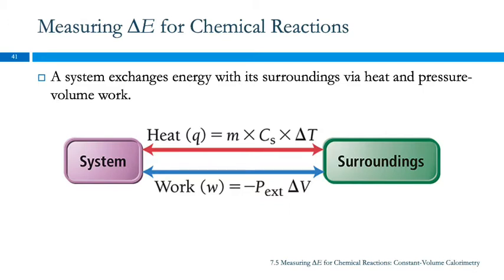We've learned that a system exchanges energy with its surroundings via heat, Q, and pressure volume work, W. This illustration shows the system and the surroundings. We define the system however is convenient for the problem we're trying to solve, and the surroundings is everything else. Energy can be transferred here by heat,